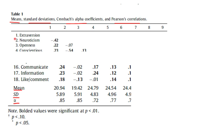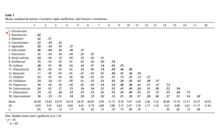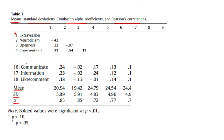Extroversion is number one, so column one contains extroversion scores. Extroversion correlates perfectly with itself, so that's always 1 and we don't list it. The correlation between extroversion and neuroticism is -0.42, and between extroversion and openness is 0.22. At the bottom of column one you find the mean, standard deviation, and Cronbach's alpha for extroversion. Reading the table titles will help you understand what's going on.